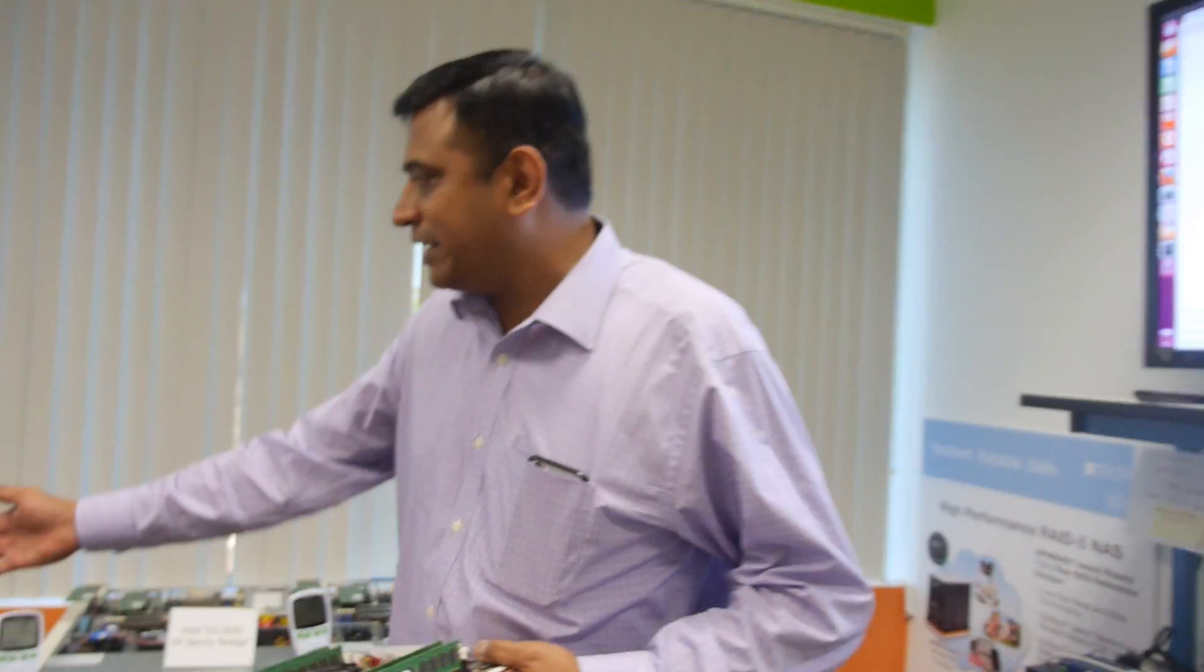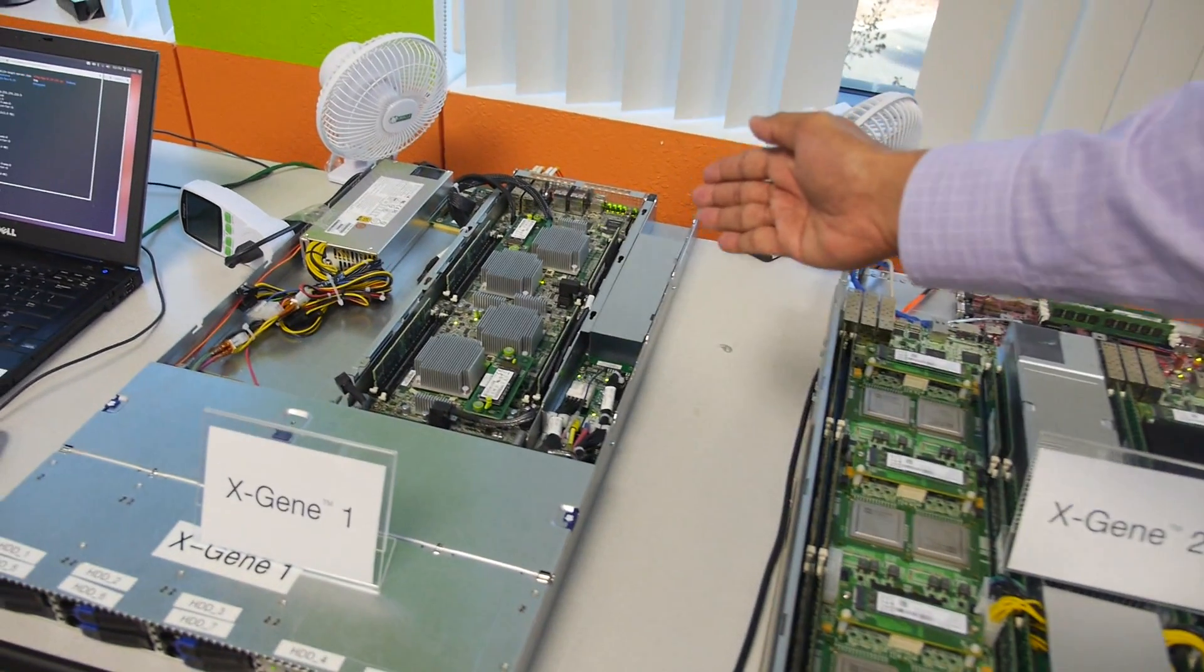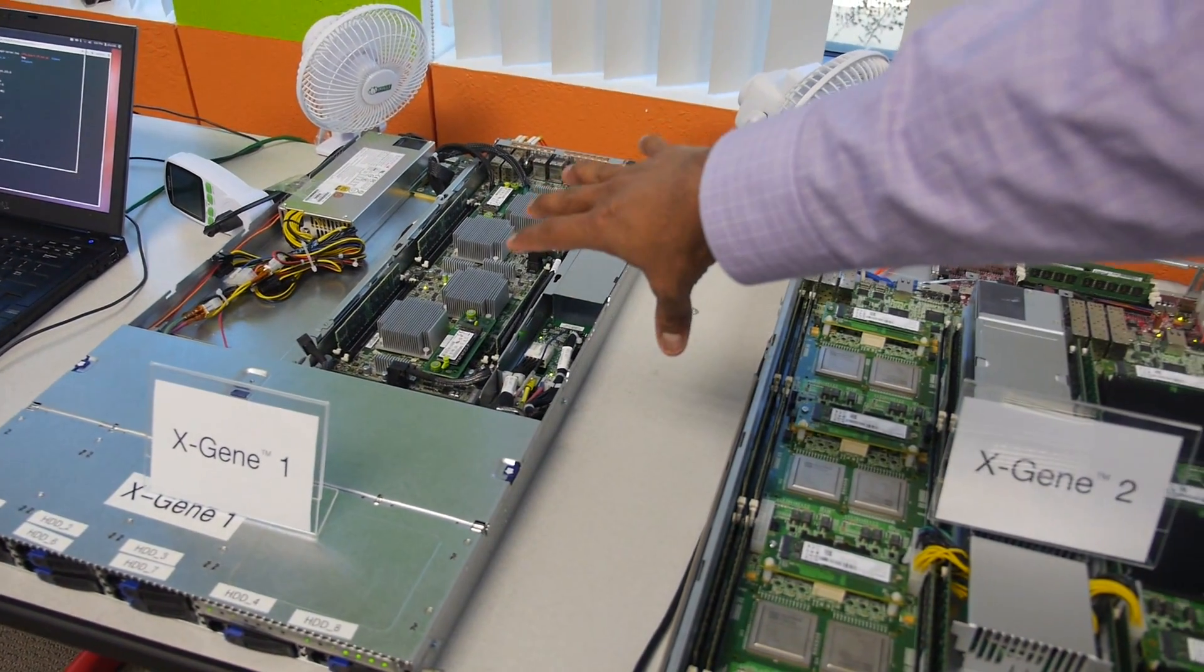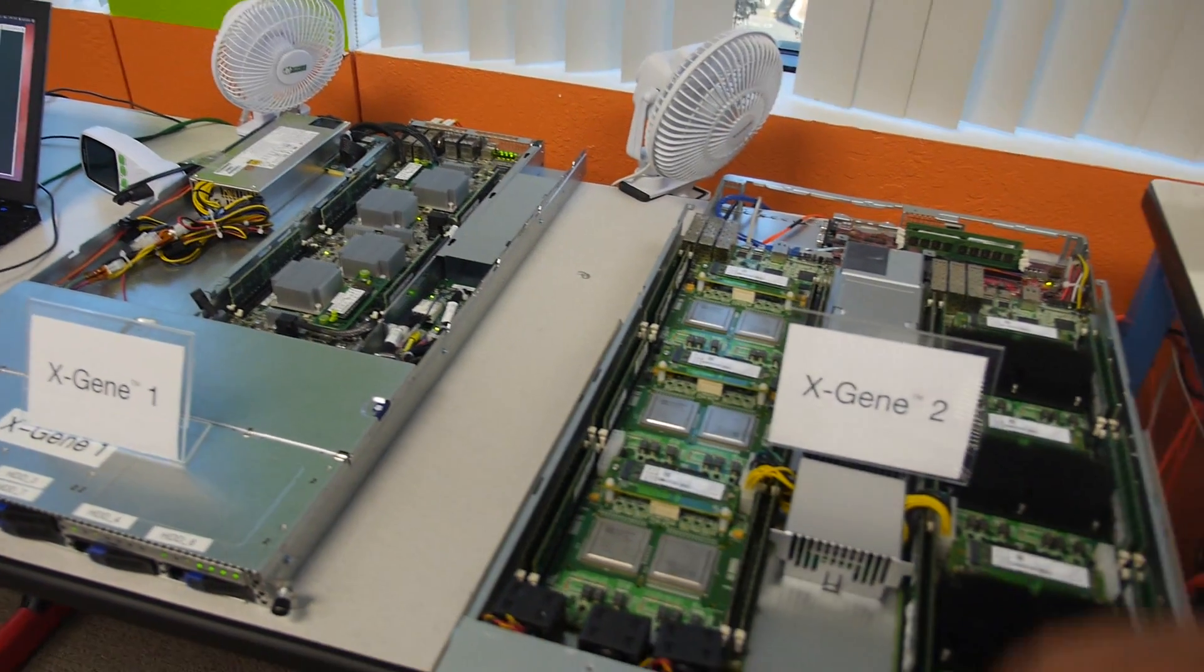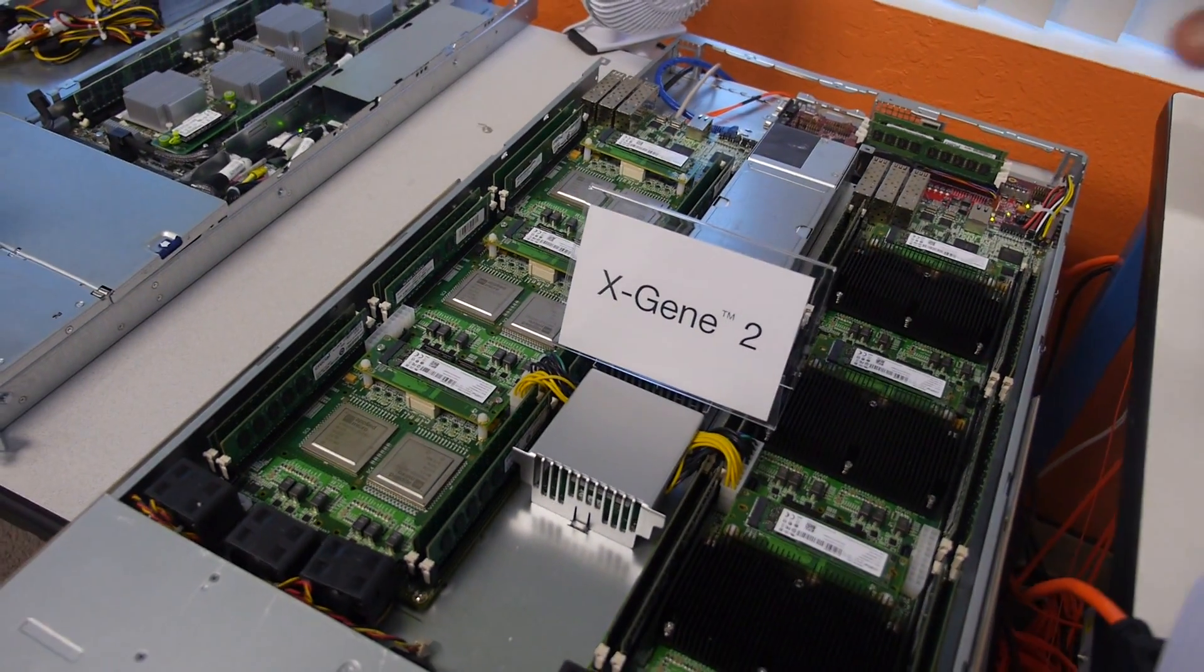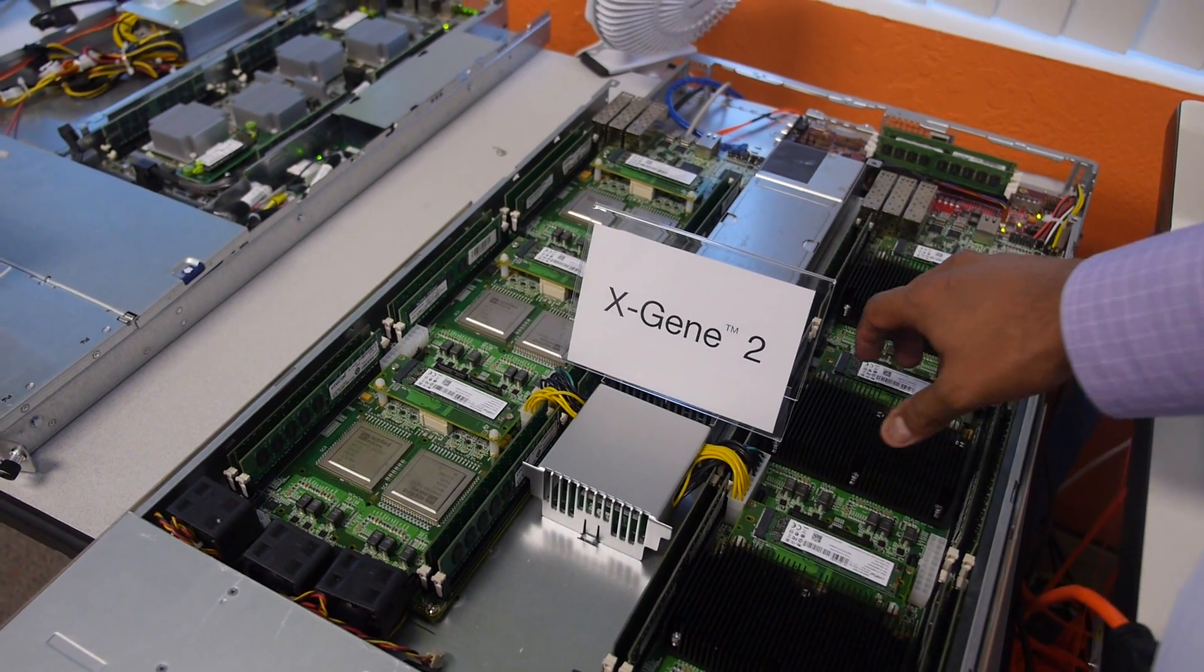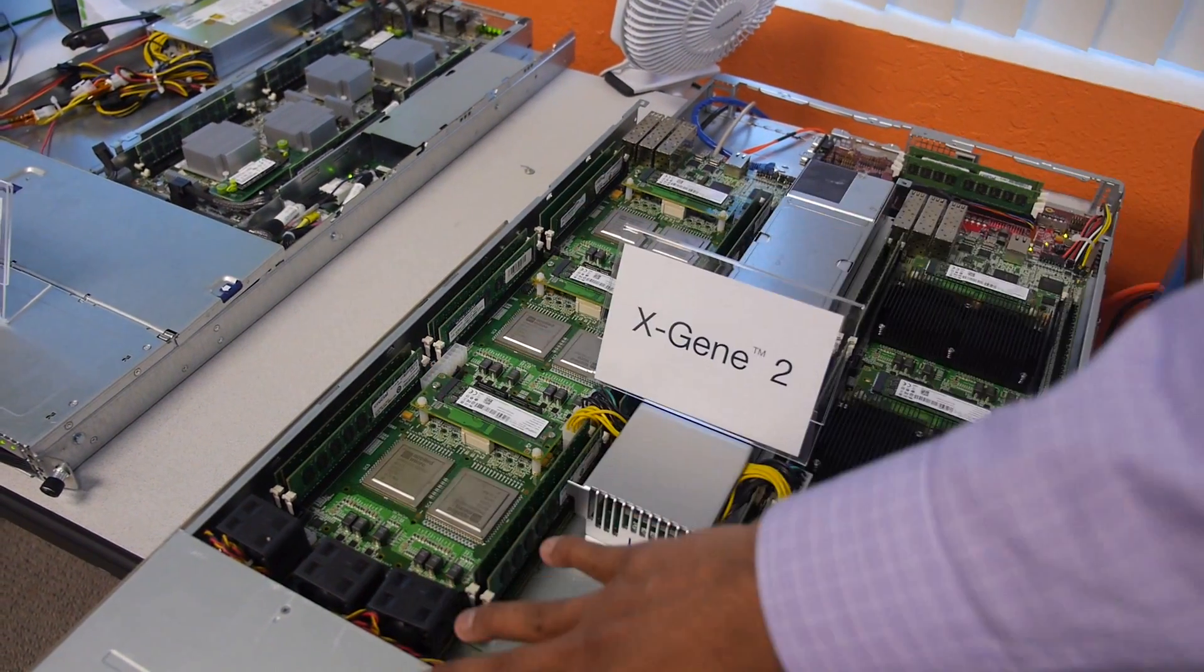The systems we're showing for benchmark comparison are the X-Gene 1. This is a four-node system with four X-Gene 1s in a half-width chassis and a 1U form factor. And here's the X-Gene 2 based chassis, very similar form factor. We have six chips here in a half-width form factor and two half-width for 1U.